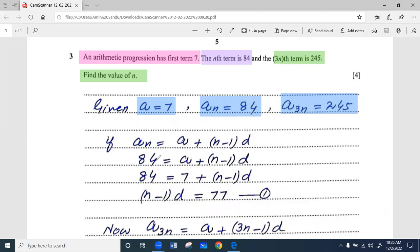If a_n equals a plus (n-1)d, then n की जगह आप 84 plug-in करें और a की जगह आप 7 plug-in करें. So 84 minus 7 is 77, therefore (n-1)d equals 77.